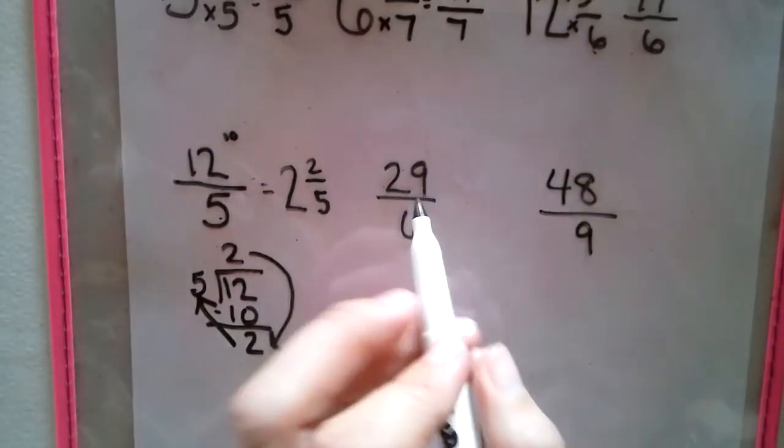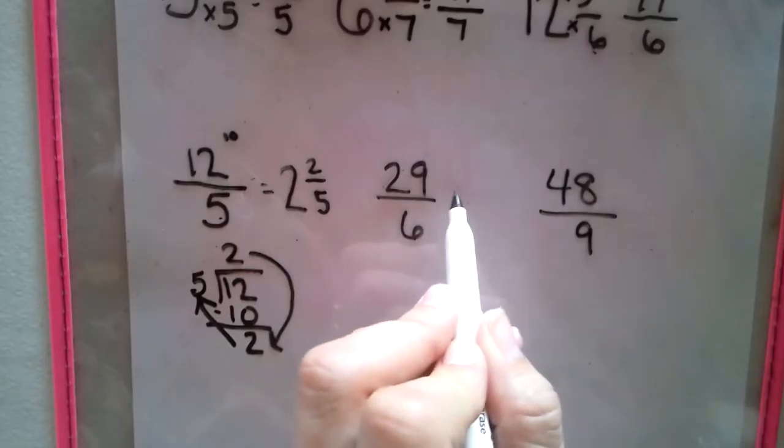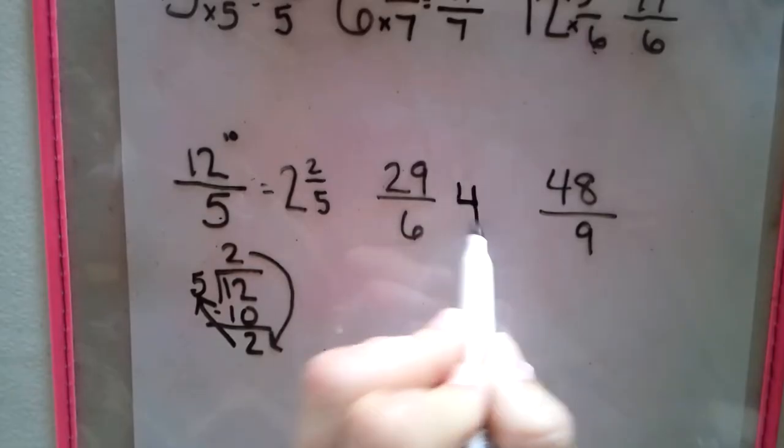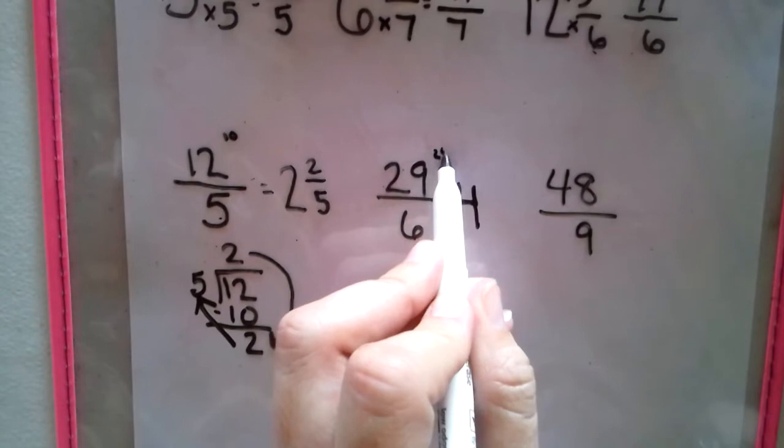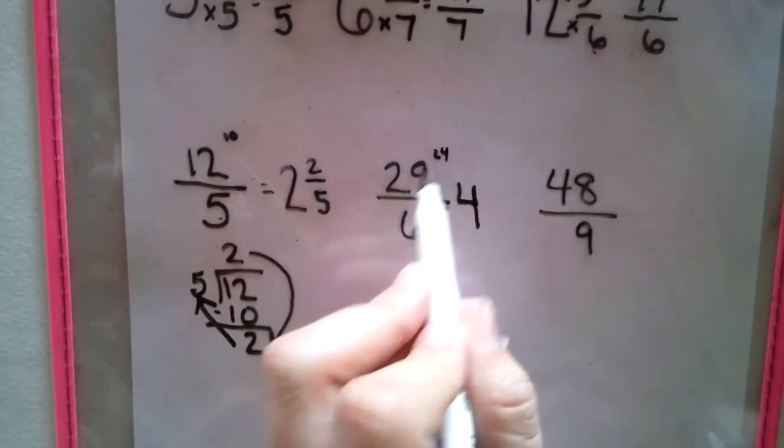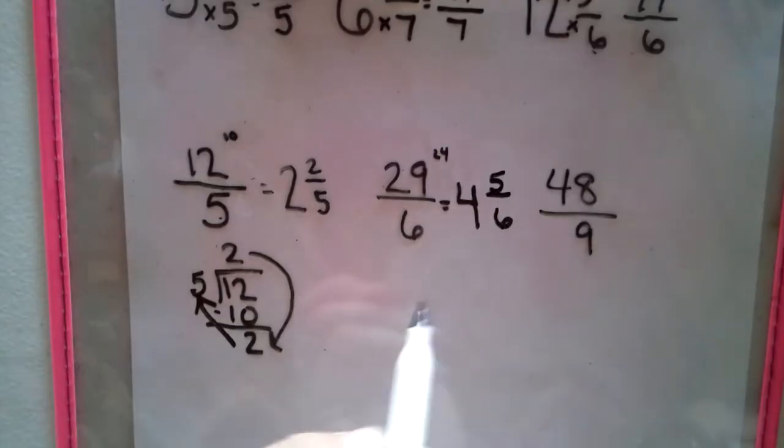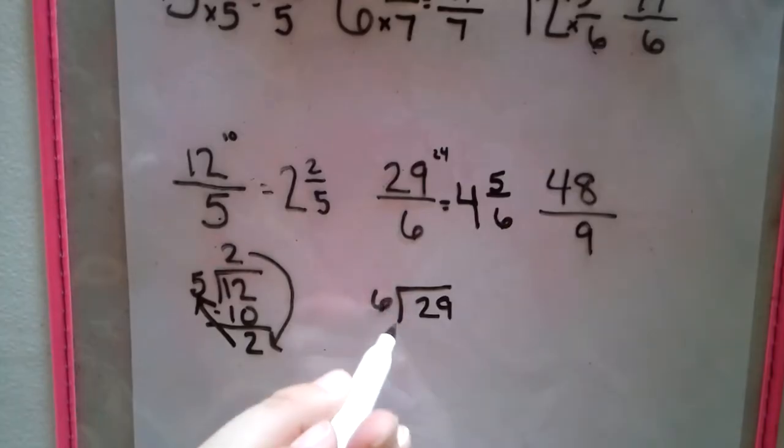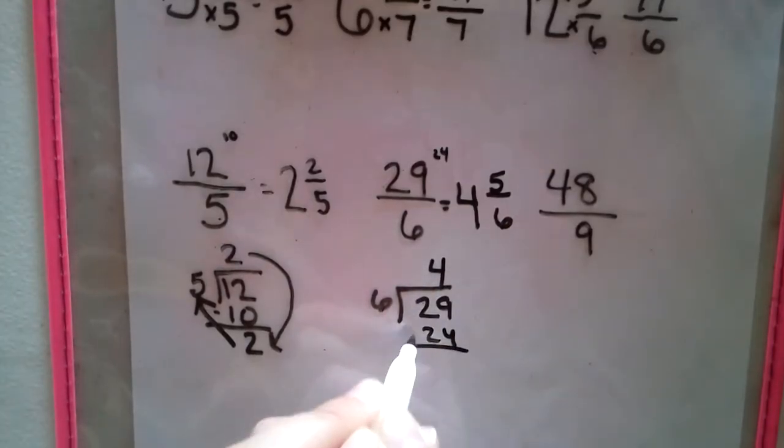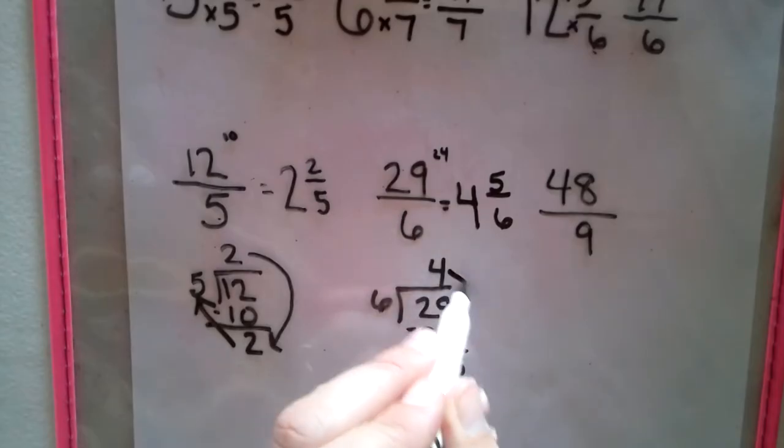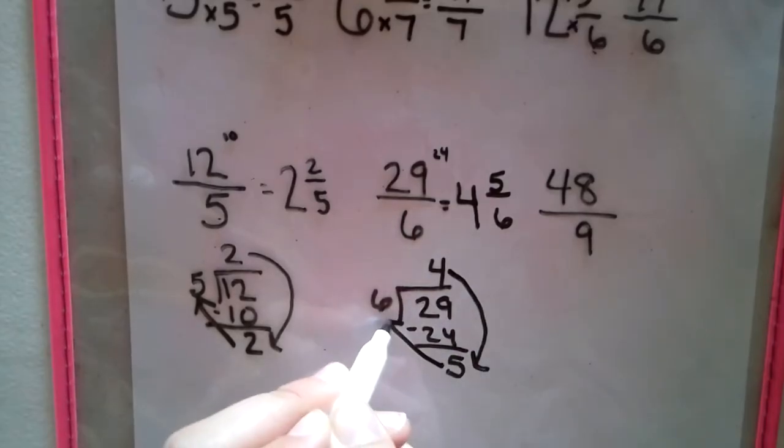How many sixes go into 29 without going over? Well we know five of them gives us 30, but that's too many, so 24. We think this little number that I'm putting here, what's left over, is 5. Denominator 6. If we have to do the math, 6 goes into 29 four times, makes 24. Left over is 5. Four and five-sixths.